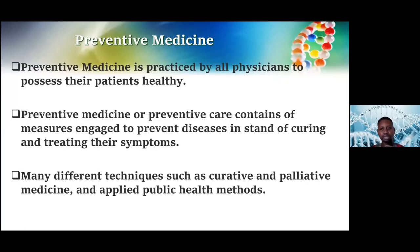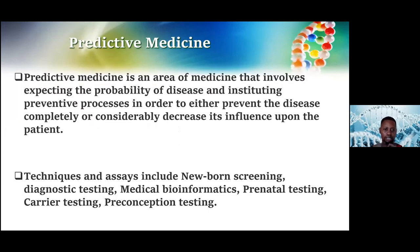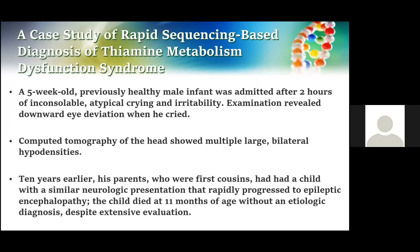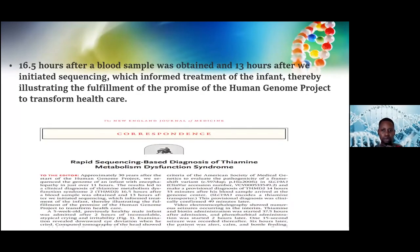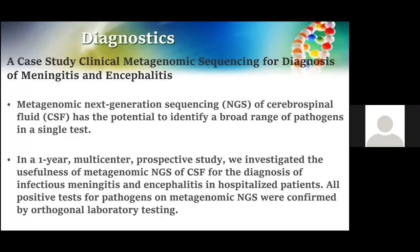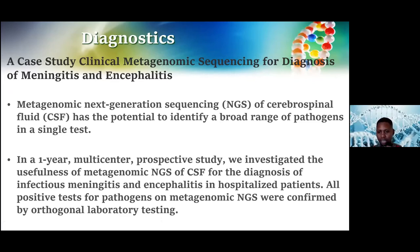Predictive medicine allows physicians to predict a patient's future health. When a child is born, their DNA is sequenced, and from that we can predict at what age a disease is likely to occur and what techniques can prevent it. In one case study, a five-week-old child was admitted, a blood sample was collected, initial sequencing was done after 13 hours, and from that we identified which gene needed to be treated. The child was treated successfully.